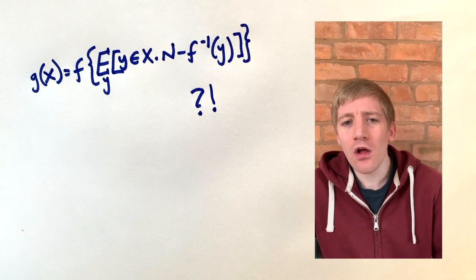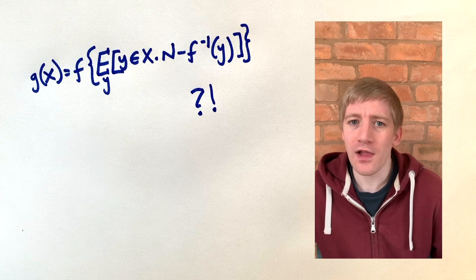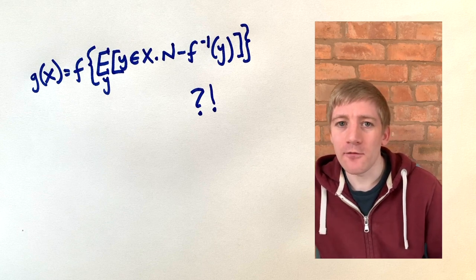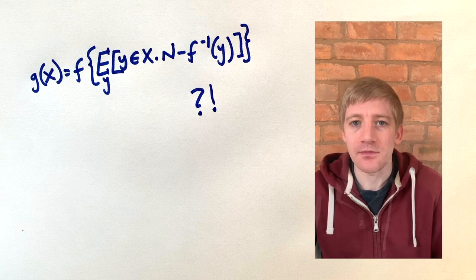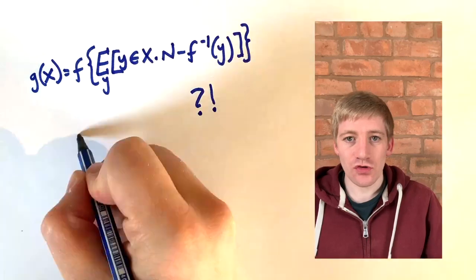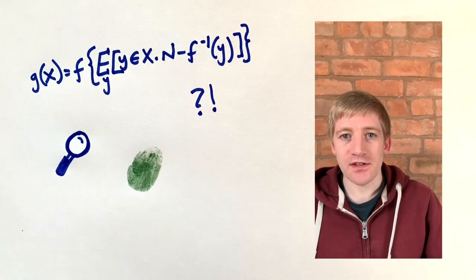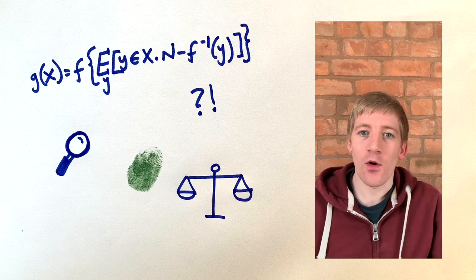But I believe a lot of things that I can't prove. For example, I can't prove that the earth's not flat, but I believe that it's round because that's the best explanation of all the evidence that's available to me. So what we need to do, if we want to decide whether the resurrection is true, is to look at the evidence surrounding it and decide what the most likely explanation is for that evidence.